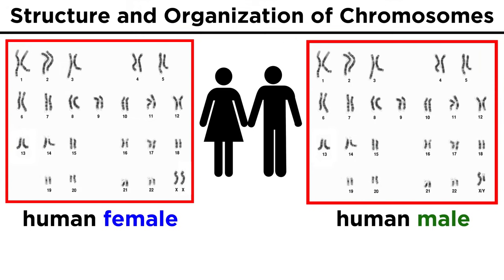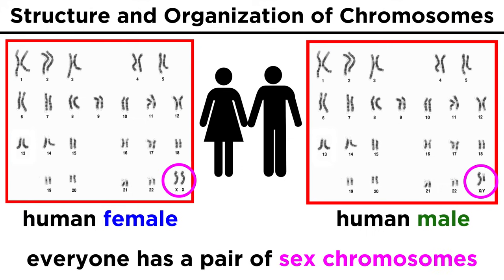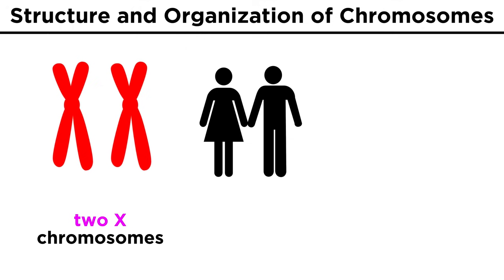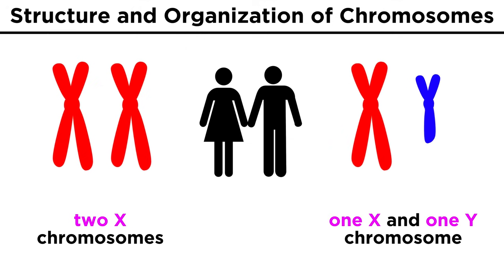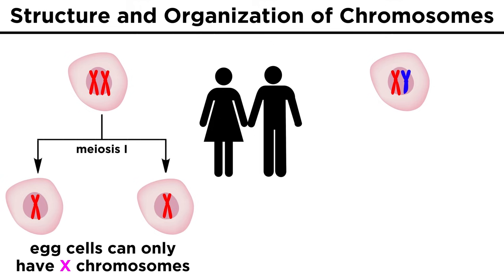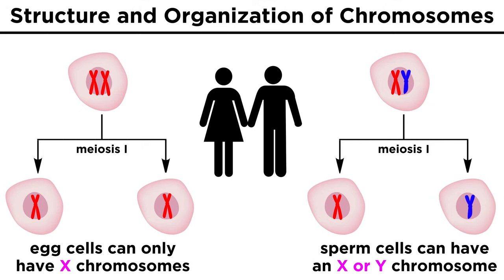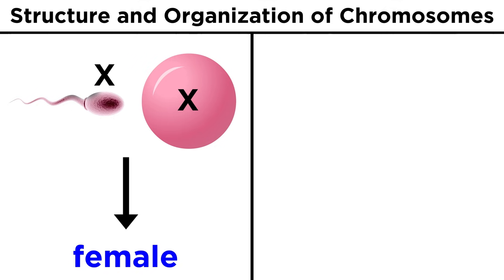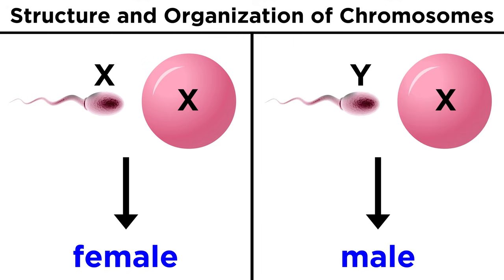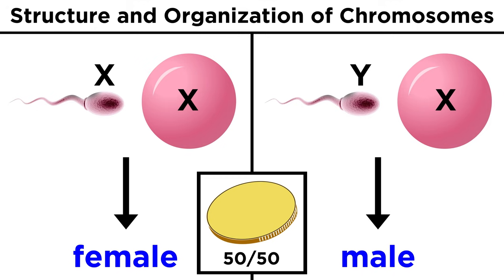Now that we understand how the genome is packaged, we should discuss a key difference in the chromosomes of human males and females. There is a pair of sex chromosomes present in each cell, and for a female these are both X chromosomes, but for a male, one is X and one is a Y chromosome, which is much smaller. During meiosis, all egg cells get X chromosomes, but sperm cells can end up with either an X or a Y. A zygote that inherits two X chromosomes will become a female, and one that gets an X and a Y will become male, so sex determination is essentially a flip of a coin.